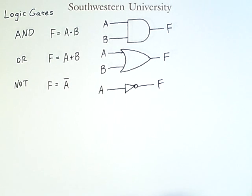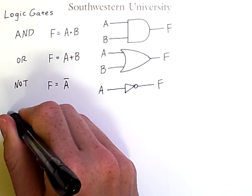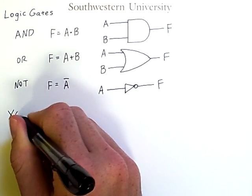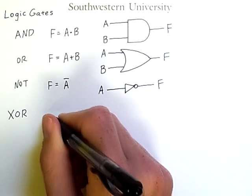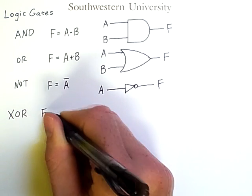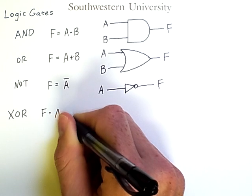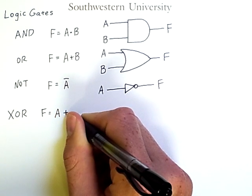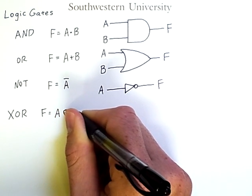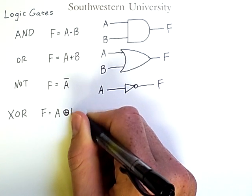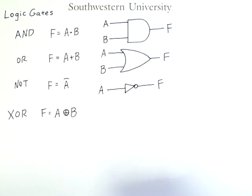Now these are the three basic logic operations that we're perhaps most familiar with. We also discussed exclusive OR, and we can create a gate for that as well. In this case F computes the exclusive OR, which is denoted with this plus sign in a circle of inputs A and B.